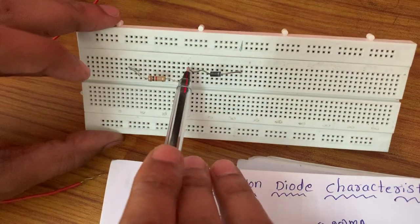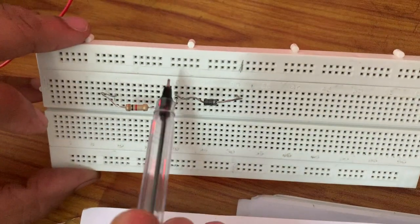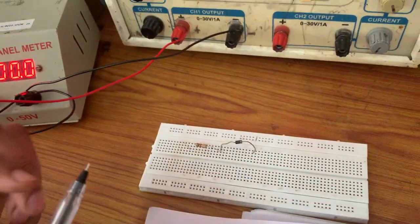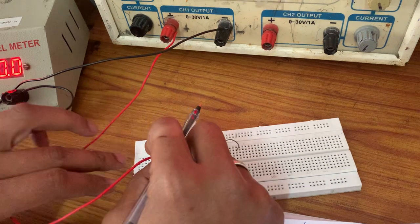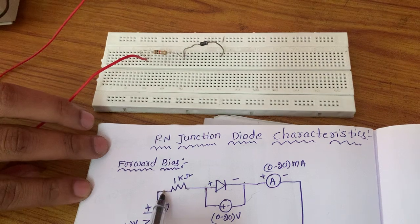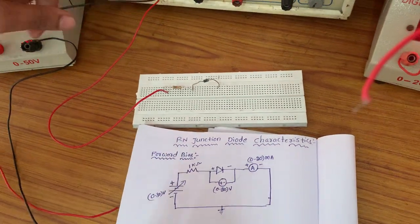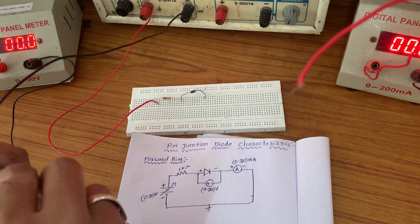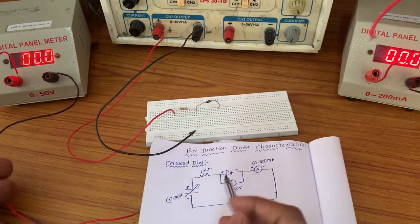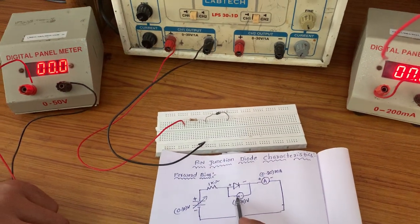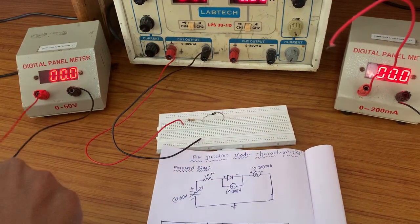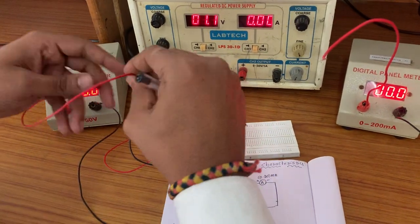Now let's connect the circuit. The 1 kilo ohm second terminal is connected to the diode P-type. Both are connected vertically. RPS positive is connected to the 1 kilo ohm first terminal. RPS negative is connected to ground. For the voltmeter, the voltmeter positive is connected to the diode P-type and the voltmeter negative is connected to the diode N-type.